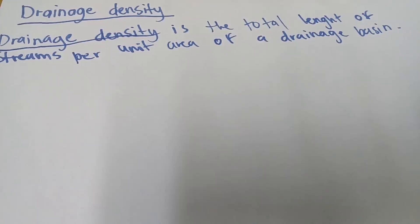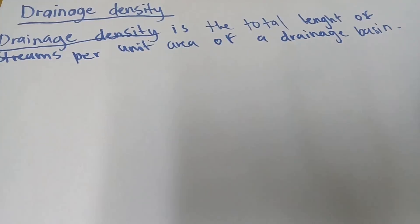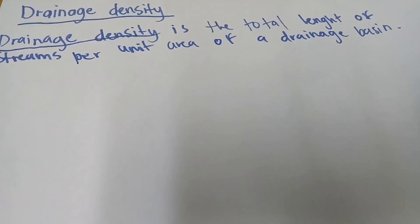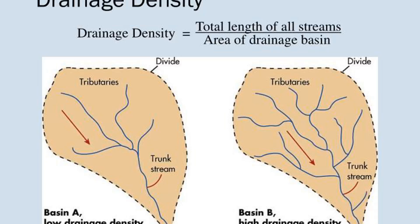So drainage density is the total length of streams per unit area of a drainage basin. This means that a drainage basin can have a higher drainage density or a low drainage density.